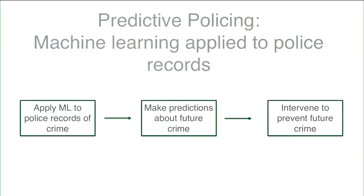Predictive policing is essentially applying machine learning to police records with the goal of making predictions about future crime. You take police records of crime in a city, apply machine learning, and it learns patterns in that data. Based on those patterns, you make predictions about future crime — where it will occur or who will commit it — and an intervention can be made, such as sending police to predicted high-crime locations to stop crime before it happens.